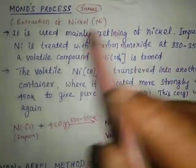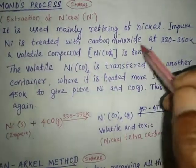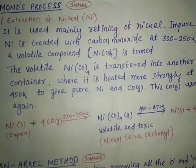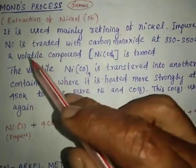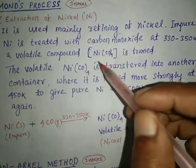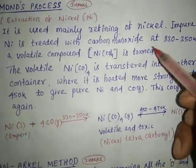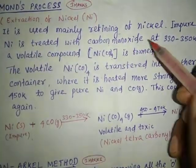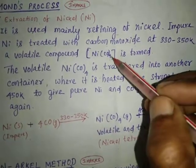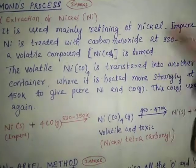Impure nickel is treated with carbon monoxide at 330 to 350 Kelvin, so that a volatile compound Ni(CO)₄ is formed — meaning nickel tetracarbonyl compound is formed.